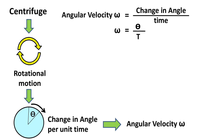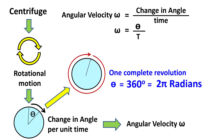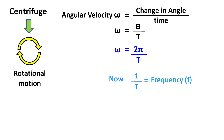One complete revolution equals 360 degrees, which is equal to 2 pi radians. So the equation becomes omega equals 2 pi divided by t. Now 1 divided by t is frequency f, so omega equals 2 pi f.